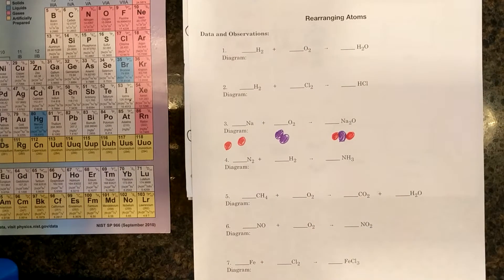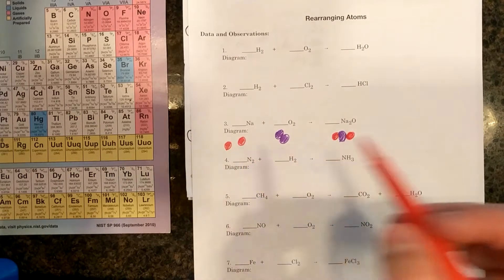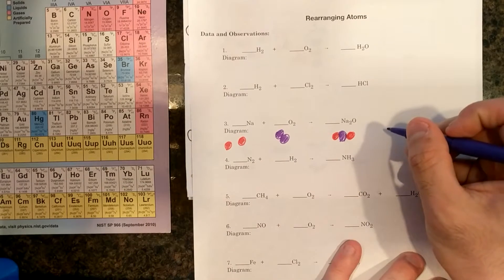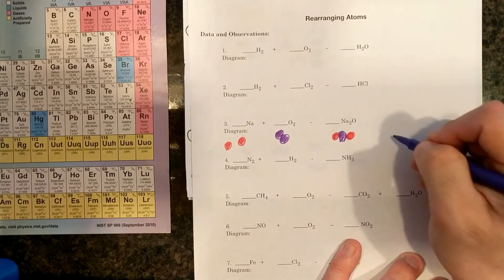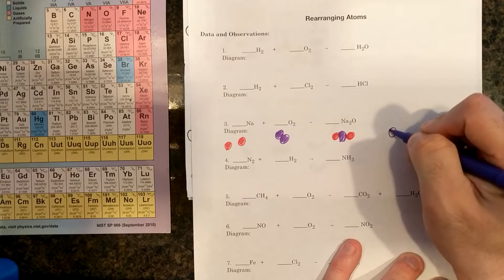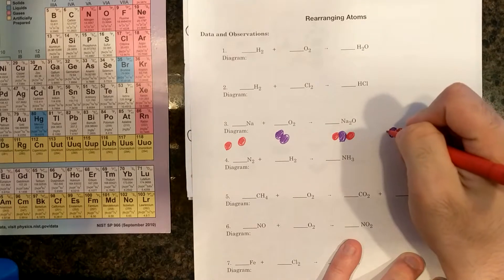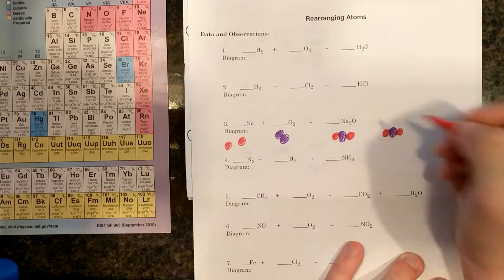And now I'm almost there. I have two Nas on the left, two Nas on the right. I have two O's on the left. I only have one O on the right. If I want to add another O to get two, I have to add O in the form of Na2O.